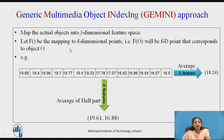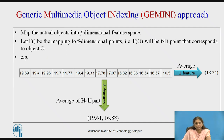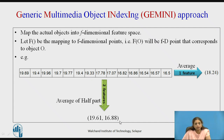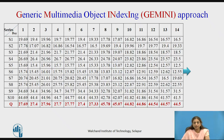The next step is to map actual objects into f-dimensional feature space, where F is a mapping to f-dimensional points and F(o) is the point corresponding to object o. For a single feature (e.g., yearly average), all values are converted to one value — a one-dimensional point. If two features are used (e.g., average of first half and average of second half), each series is mapped to a two-dimensional feature space.